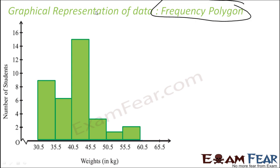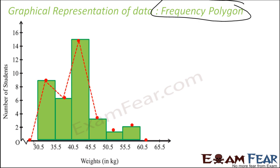One more way to represent quantitative data instead of the histogram is if we join the midpoints of the upper side of the adjacent rectangles. So let's plot the midpoints of the upper side of these rectangles, and also let's plot two additional points — the midpoints of the next class and the previous class — and join these points.